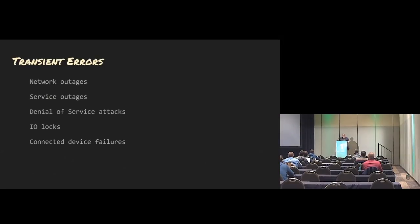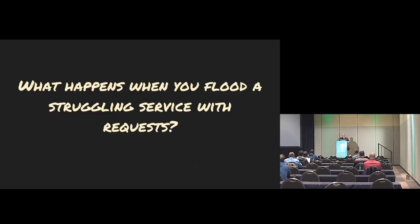Transient errors are network outages, as I said before. Also service outages — things that you have no control over. Denial of service attacks, obviously. And IO locks and connected device failures are also in that list. But mostly it's network and service outages. Service outages happen a lot less, obviously.